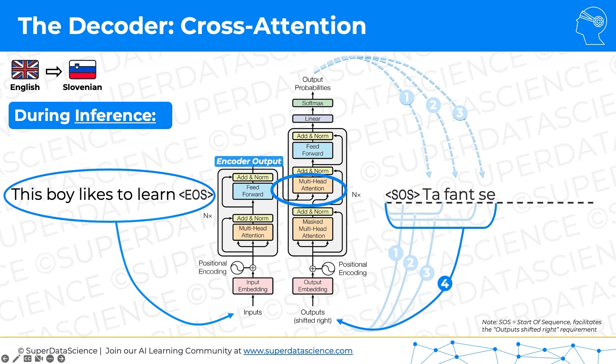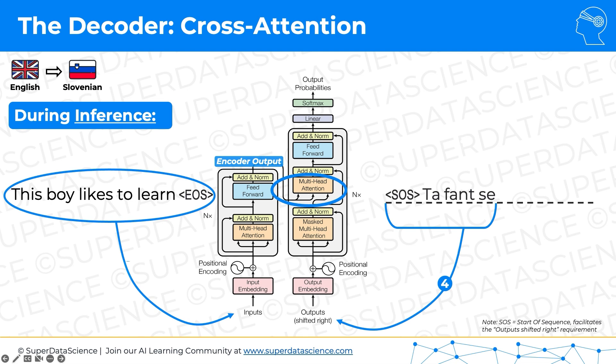So there's our cross-attention. I'm going to remove the faded arrows to give us some space so we can focus, because this is actually one of the key components of the transformer specifically relating to translation tasks. Let's see what we have so far.